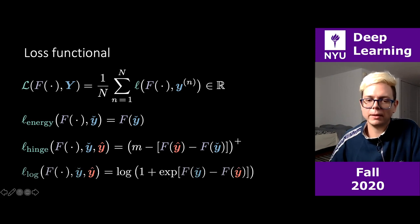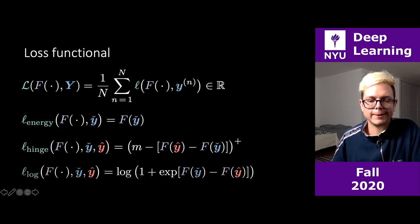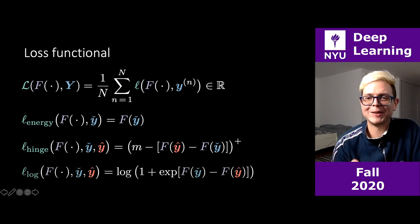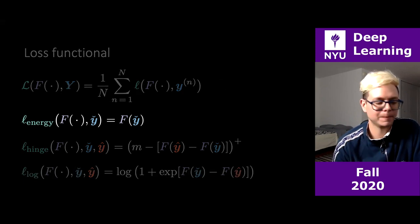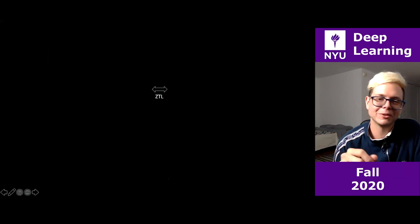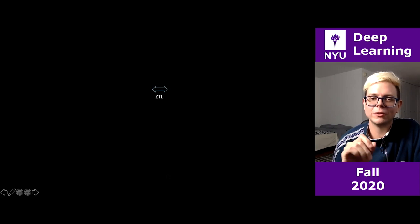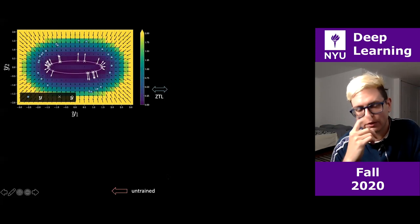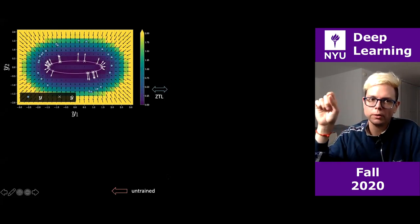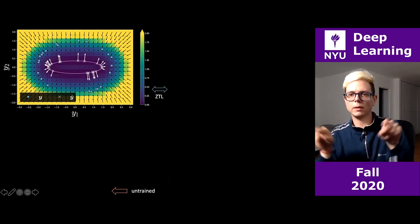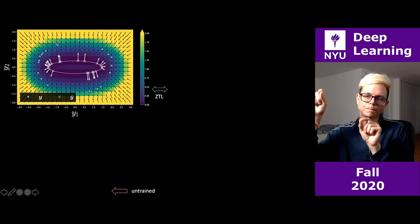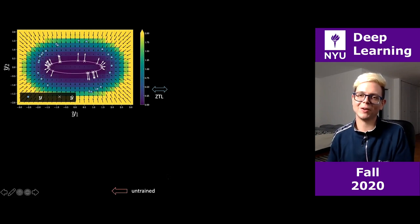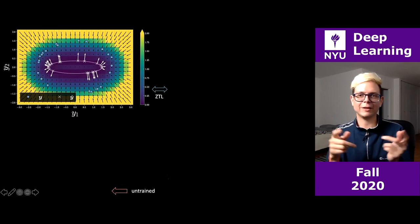For our case with a one-dimensional latent, we don't need contrastive sampling — it's necessary for high-dimensional latents. Let's just train the model with the energy loss functional. It takes only one epoch to converge — ridiculously fast because it's a toy example. I'll start by showing the zero temperature limit free energy.